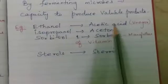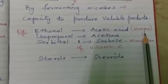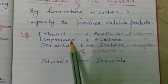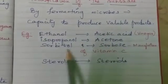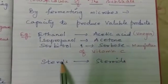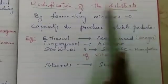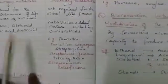Examples of bioconversion include: ethanol into acetic acid using vinegar bacteria; isopropanol into acetone; sorbitol into sorbose, which is used for manufacturing vitamin C; and sterols into steroids. These are all examples of modification of the substrate, which are some of the applications of the fermentation process.